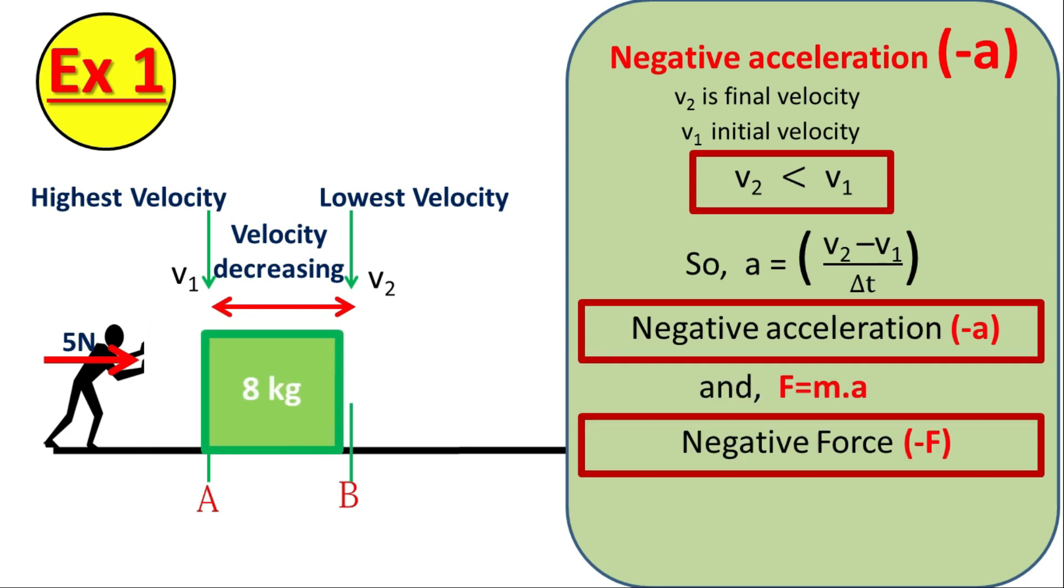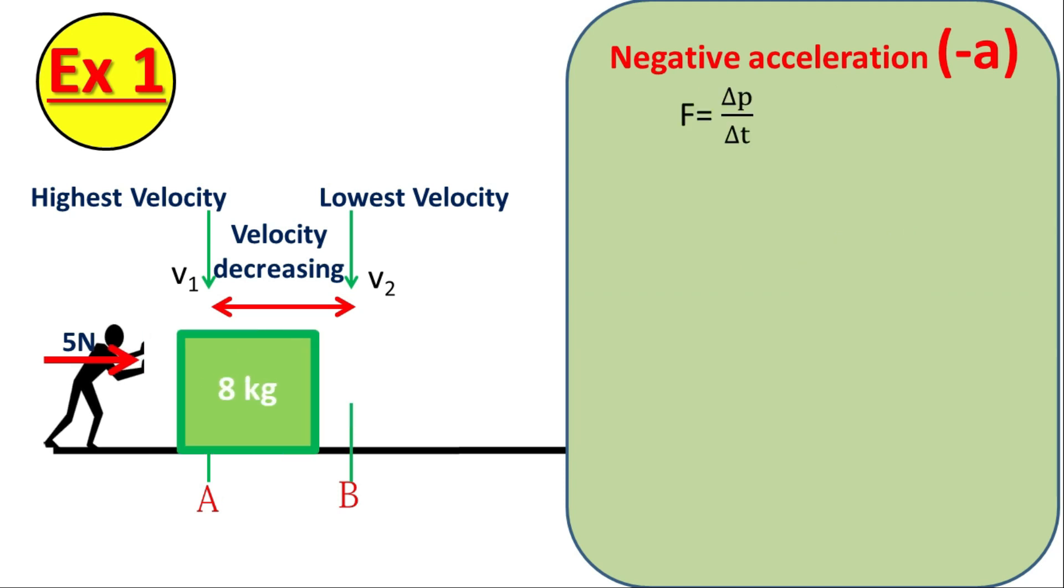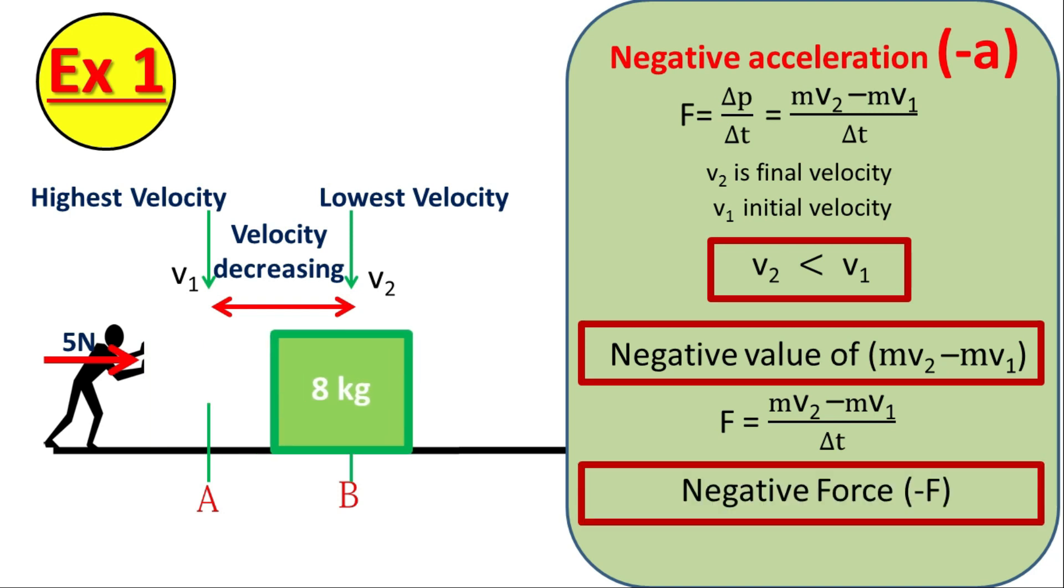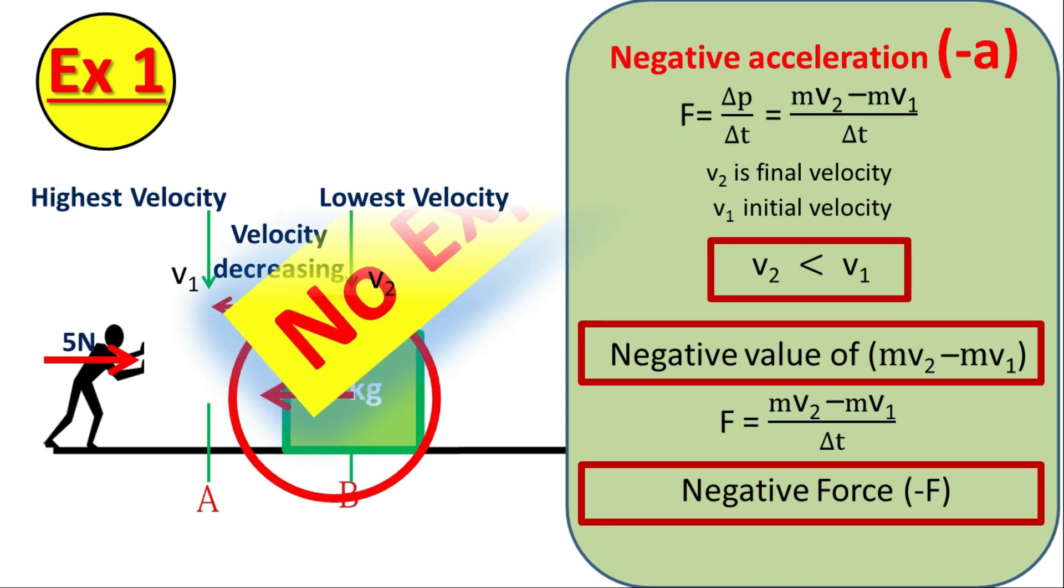If acceleration is negative, then the value of force will also be negative. And if you calculate it by another formula of change of momentum, that is F is equal to delta P upon delta T, that means F is equal to mV2 minus mV1 upon delta T. Because V2 is lesser than V1, so value of mV2 minus mV1 will also be negative. So, the value of force will also be negative. That negative force can be shown by opposite vector like this. So, what does this negative force mean? And how this opposite force will work? Any explanation? I know, there is no explanation. It's also unsolved.